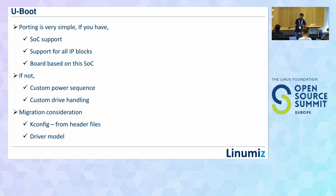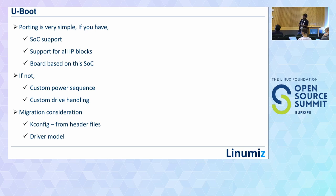We also migrated the U-Boot bootloader from the 2009 version to the 2020 version — though we won't discuss every detail. The 2009 version had no device tree support from the U-Boot perspective, so we added U-Boot device tree support, moved board definitions, added custom power sequences for telematics systems, suspend-to-RAM, and other functionality. We'll focus on what specifically changed in the Linux kernel and the resulting impacts on U-Boot.